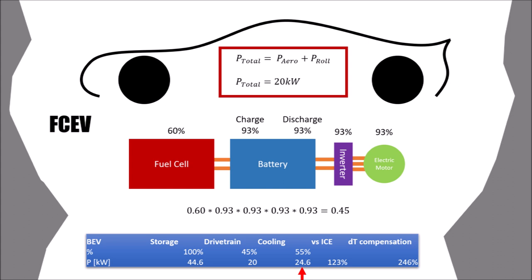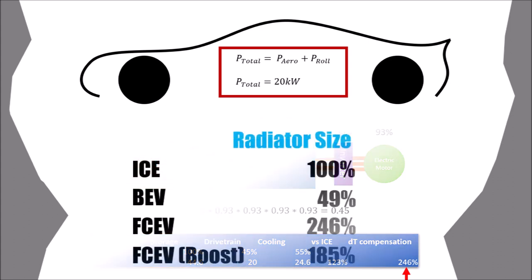So that means that we need even more cooling than for an ICE car. And now again we need to remember the same low temperature levels of the fuel cell drivetrain. Again we need to double the radiator size to compensate for the lower temperature difference compared to the ICE car. The result is that the fuel cell car needs 2.5 times more cooling than an ICE car, doing the same thing where the electric car only needs half the cooling.